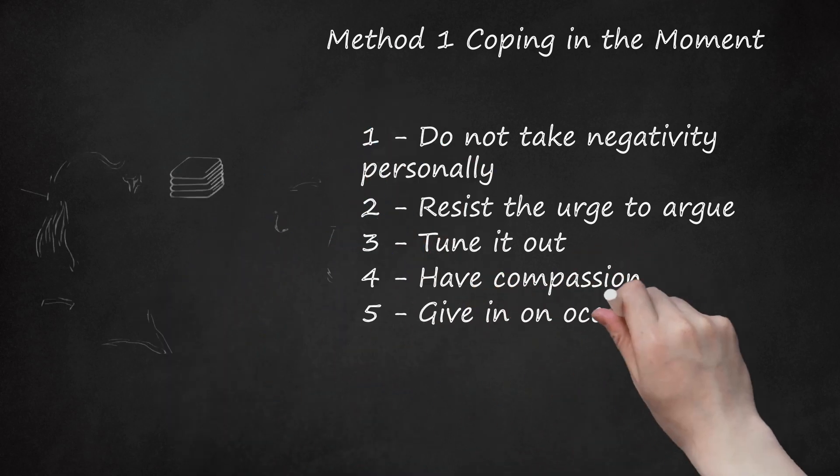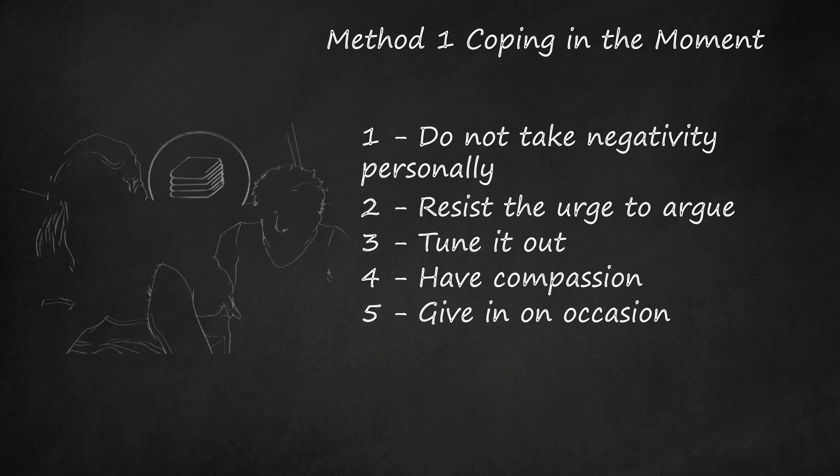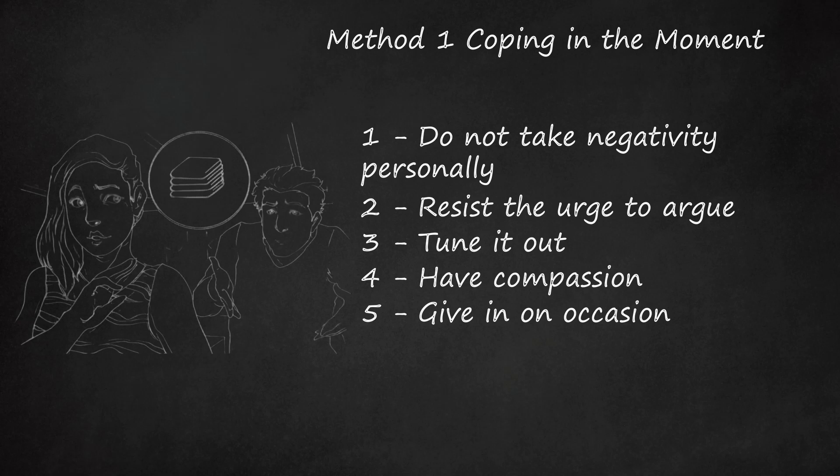Sometimes, simply having compassion for someone can ease your frustration with that person. Five, give in on occasion. If you're living with an overly critical person, sometimes it's easier to let go of minor things. If your boyfriend bites your head off when you don't fold the laundry in a particular fashion, just do it his way. It's not a big concession to make and it can ease up on some tension.